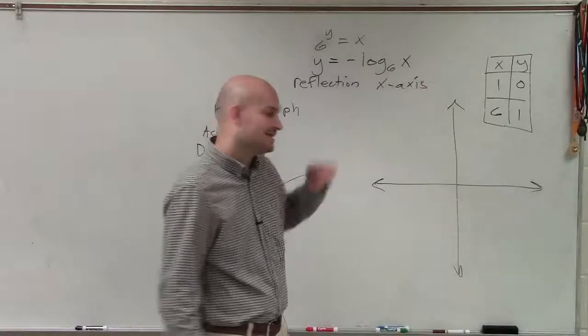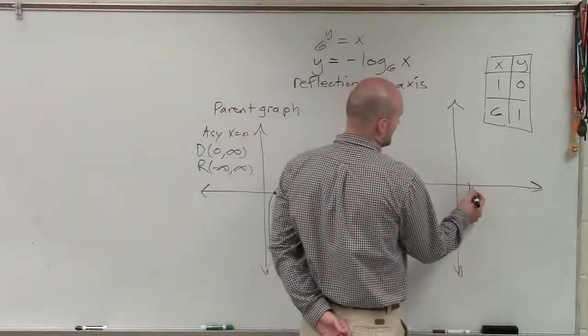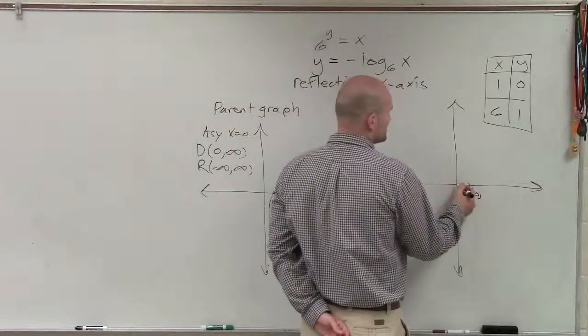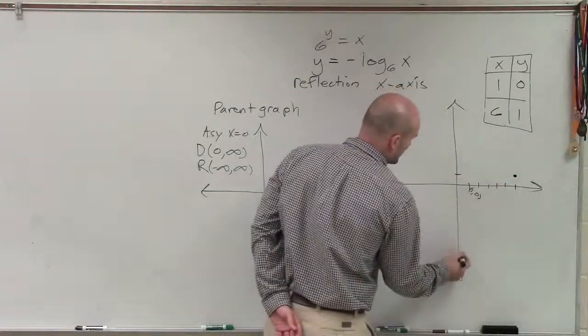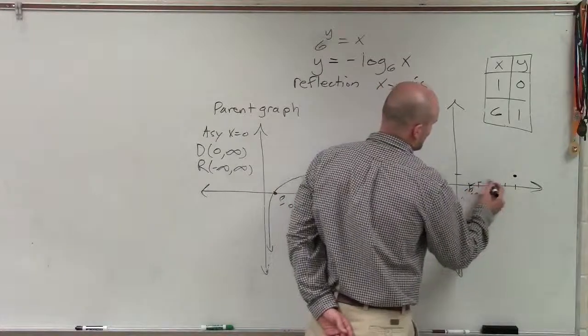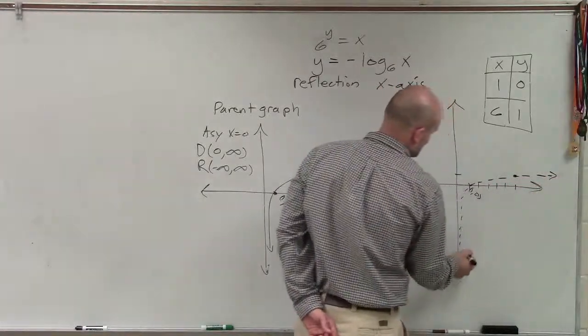So now I can plot these two points as my parent graph. So I have 1 comma 0, and I have 6, 1, 2, 3, 4, 5, 6 comma 1. So my graph, my parent graph, looks something like this.